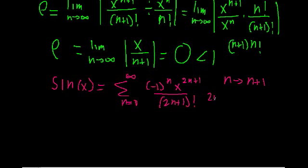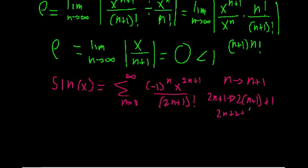Let's do it out by hand. If we have 2n+1 and replace n with n+1, that's going to become 2 times (n+1) plus 1. We have to distribute out the 2, so we get 2n+2+1, which is just 2n+3. The reason I want to do this by hand is that people occasionally forget to distribute out the 2 — it's a common mistake.